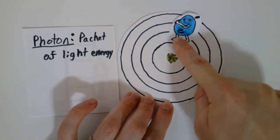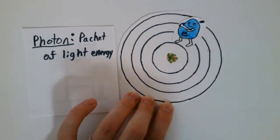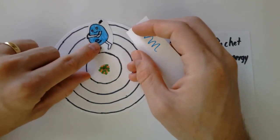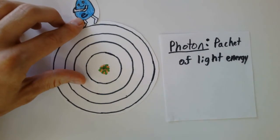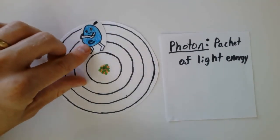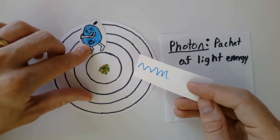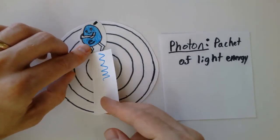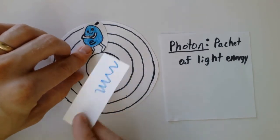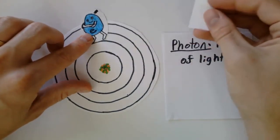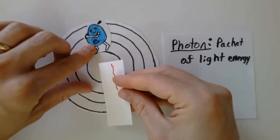As electrons fall they can fall all the way down or step by step. If an electron jumps down it releases energy as a photon. If it jumps all the way down it releases a lot of energy — blue is a wavelength of light that is higher in energy, so the electron might emit a blue photon. If it jumps in multiple smaller jumps, you might see it emit lower-energy colors like yellow and then red.